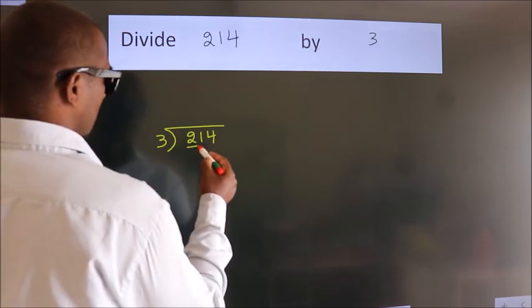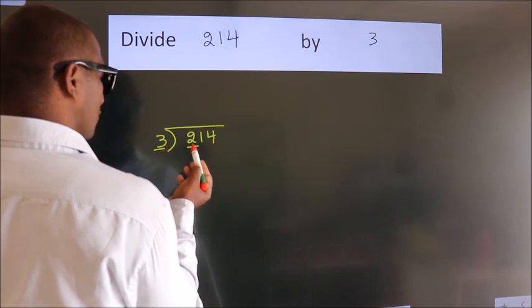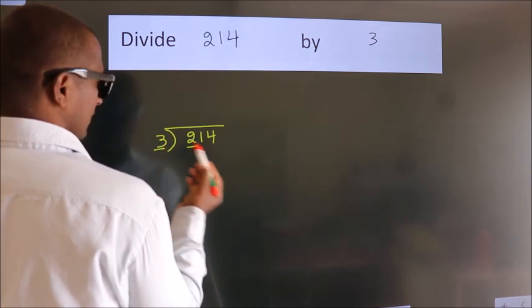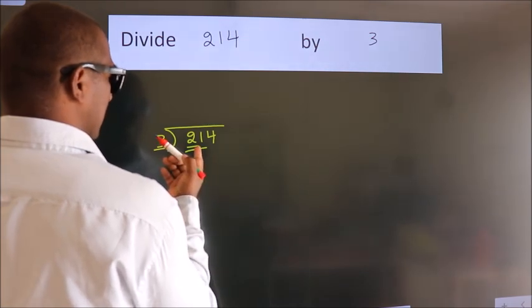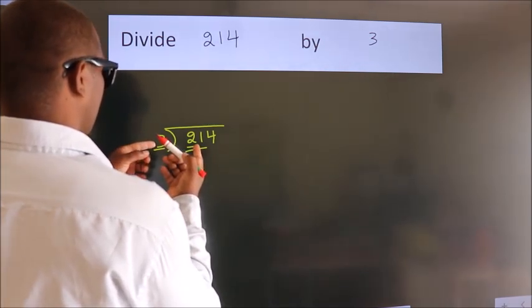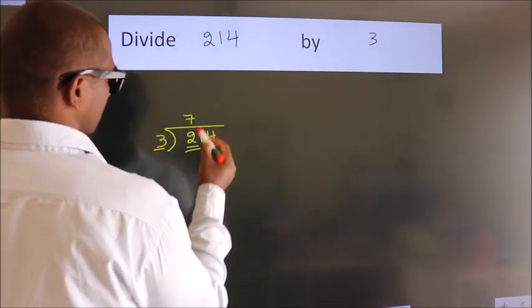Here we have 2. Here 3. 2 is smaller than 3, so we should take 2 numbers: 21. When do we get 21 in the 3 table? 3 times 7 is 21.